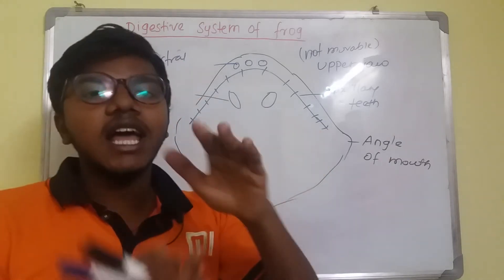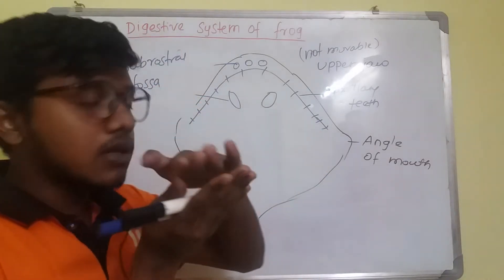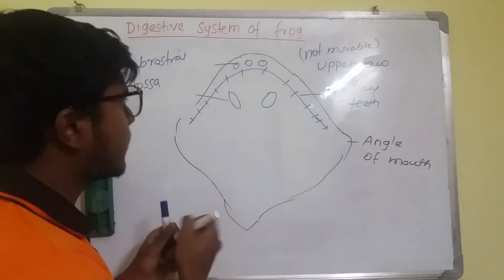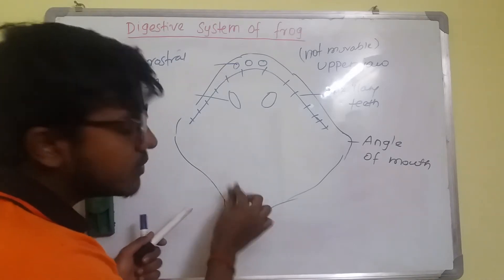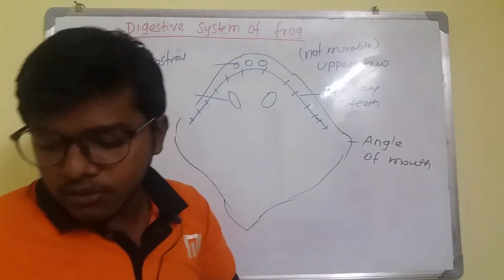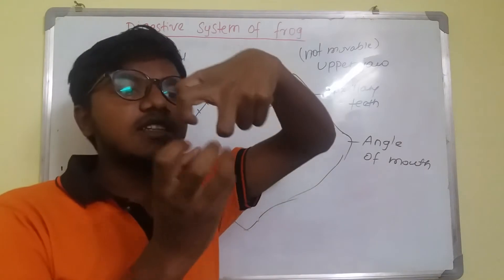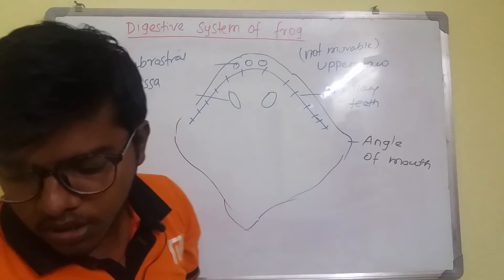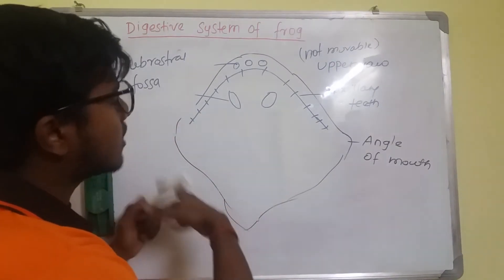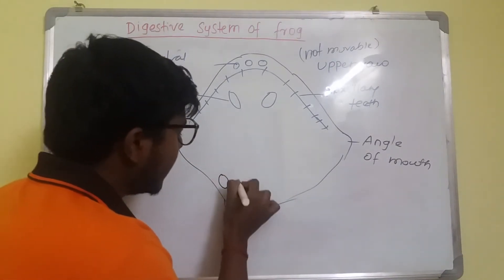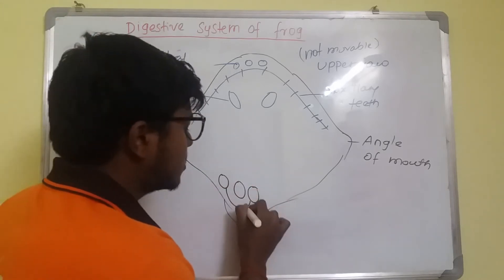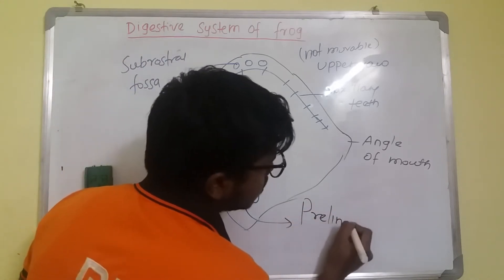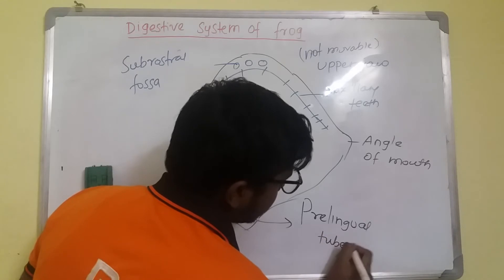Corresponding to the three fossae on the upper part, the lower floor of the mouth has three elevations for tight gapping. These elevations on the lower jaw are known as prelingual tubercles.